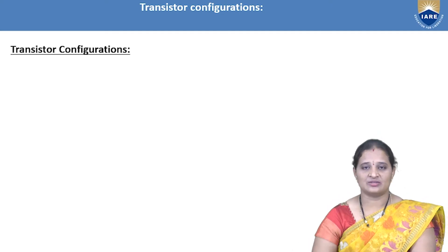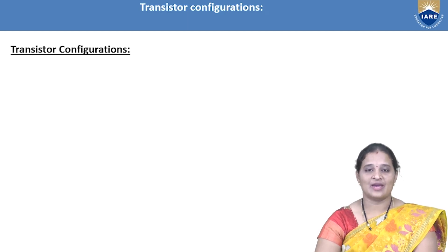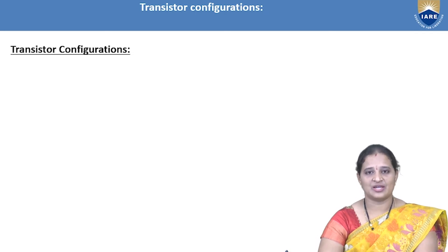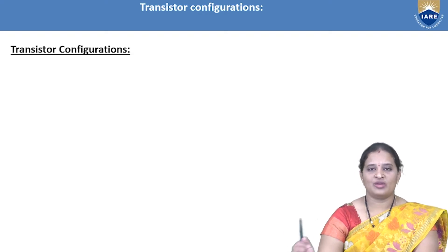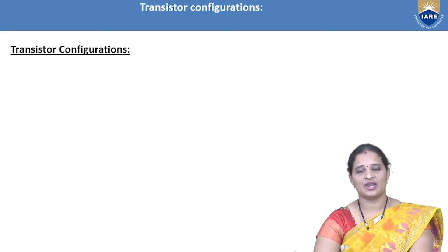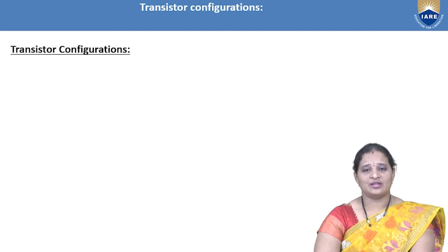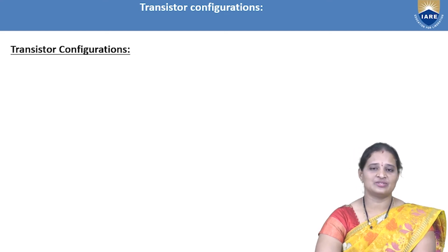First of all, what is a transistor? A transistor is a three-terminal semiconductor device which has two junctions. It is also called a bipolar junction transistor because current conduction is due to both majority and minority charge carriers. We already know that transistors are of two types: NPN transistor and PNP transistor.